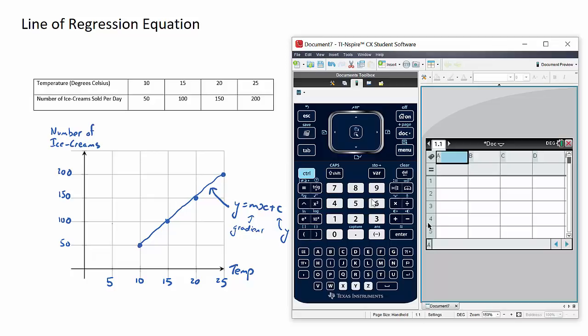Column 1 will be my temperature, usually the independent variable. Temperature in this case is the independent variable. I'm going to label my column T, and I'm going to label my dependent variable I for number of ice creams.